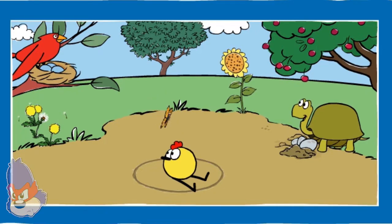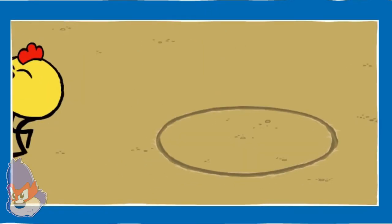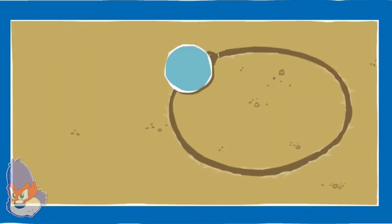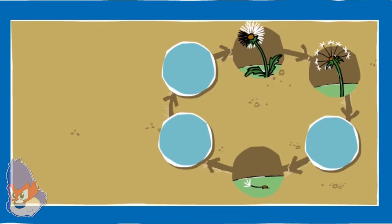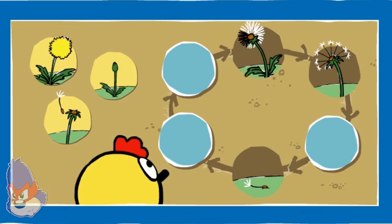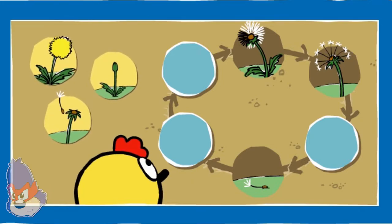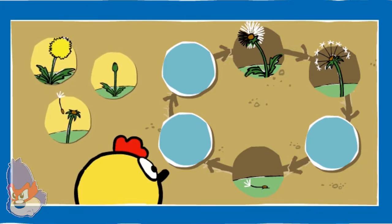Let's explore a different natural cycle with Peep. Dandelion! How about dandelions? What happens when they grow from a seed? Help Peep put things in the right order. Drag the pictures onto the spots in the circle where you think they go. Think about what happens first and what happens next.